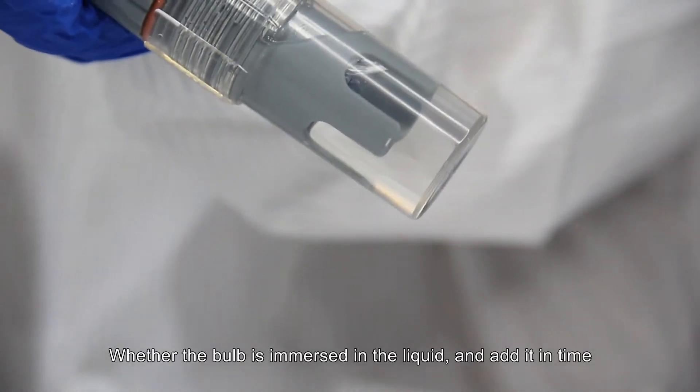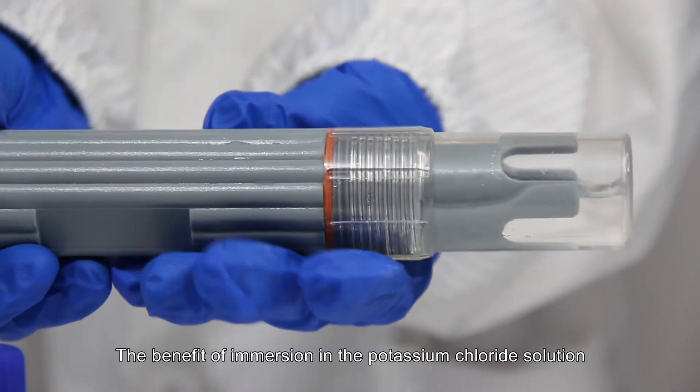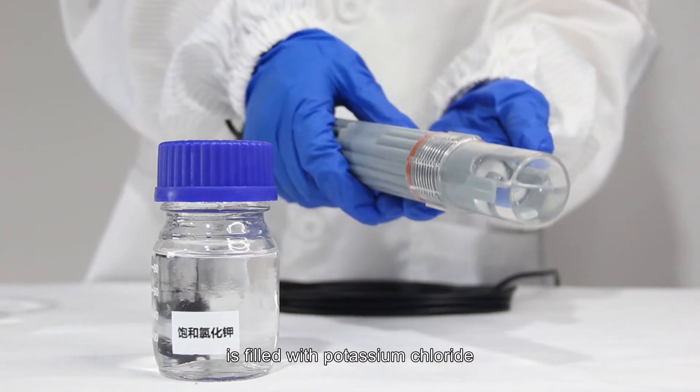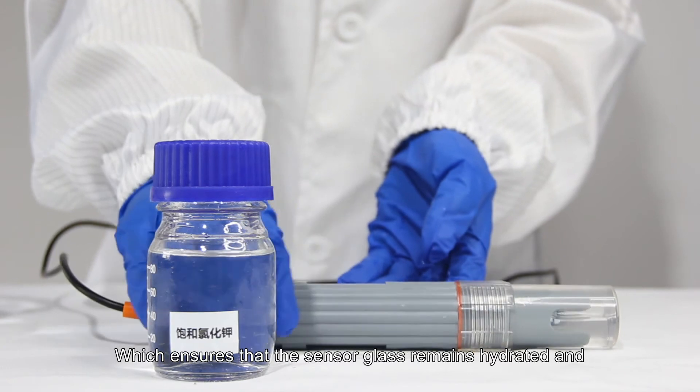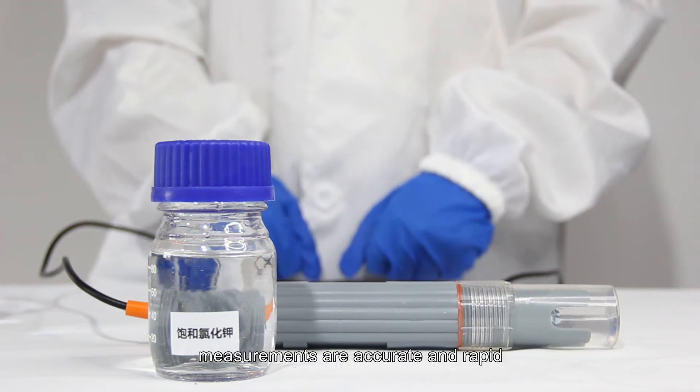The benefit of immersion in the potassium chloride solution is that the reference salt bridge is filled with potassium chloride, which ensures that the sensor glass remains hydrated and measurements are accurate and rapid.